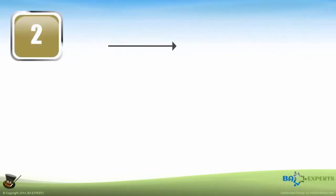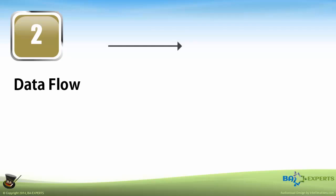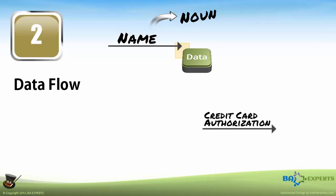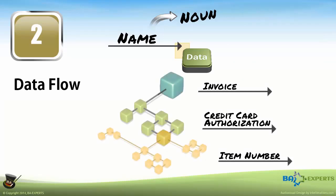An arrow represents a data flow, meaning information in motion. Because the data is going from somewhere to somewhere, the arrow points in the direction of movement. Every data flow has to have a name. Because it is data and data is a thing, the name is a noun with appropriate modifiers — for example: credit card authorization, invoice, item number. As with the process, the named data flow can be at any level of detail.